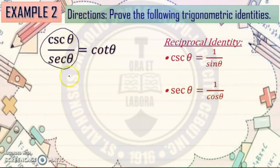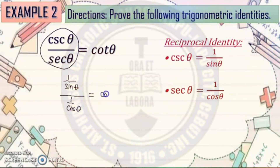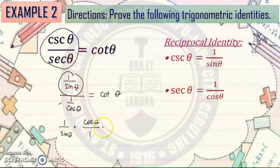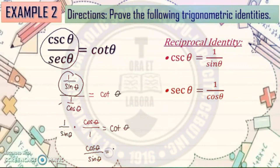We will substitute these identities into the expression. Cosecant theta becomes 1 over sine theta, and secant theta becomes 1 over cosine theta, equal to cotangent theta. This gives us a complex fraction, so we'll copy the numerator — 1 over sine theta — change the operation to multiplication, and take the reciprocal of the denominator. The reciprocal of 1 over cosine theta is cosine theta over 1. Multiplying: 1 times cosine theta is cosine theta, and 1 times sine theta is sine theta, still equal to cotangent theta.